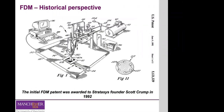FDM was probably one of the first additive manufacturing systems developed and commercialized. This is the actual patent submitted by Scott Crump, the founder of Stratasys, and the system was developed and patented back in 1992. The 1990s were quite important for additive manufacturing because most of these systems were developed in that decade. It was a rudimentary system at the time, but the working principle remained basically the same.